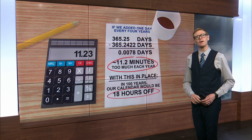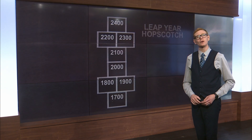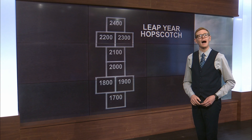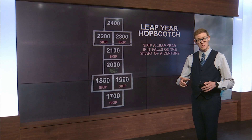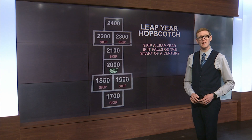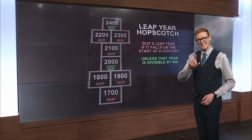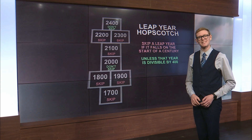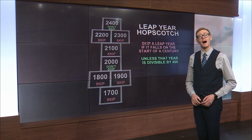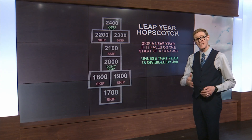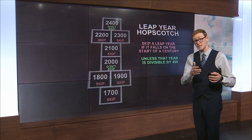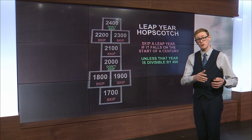That's why we have something called leap year hopscotch. We skip leap year if it falls at the start of a century, unless that year is divisible by 400. That's why we didn't skip leap day in 2000.